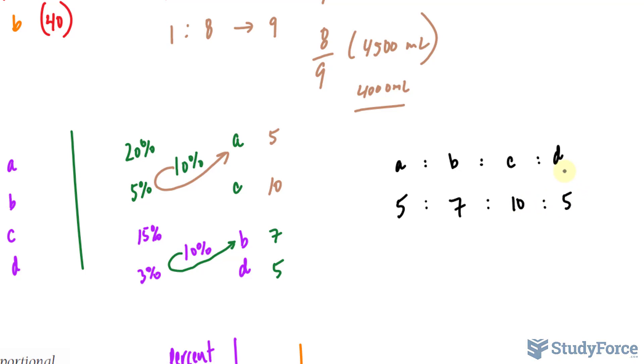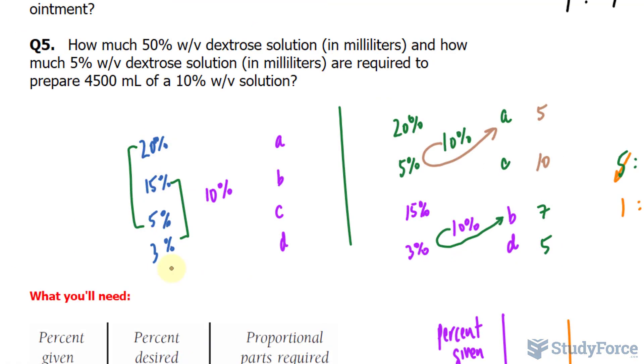C would be 10, and D would be 5. Of course, we could reduce this ratio down by taking the smallest value, in this ratio being 5, and dividing each of these by 5. So dividing that by 5, I get 1. Dividing 7 by 5 gives me 1.4. 10 divided by 5 is 2, and 5 divided by 5 is 1. Now, in case you're curious, had we chosen to mix the 20 with the 3 and the 15 with the 5 instead, our ratio would have been 7 to 5 to 5 to 10 before being reduced.